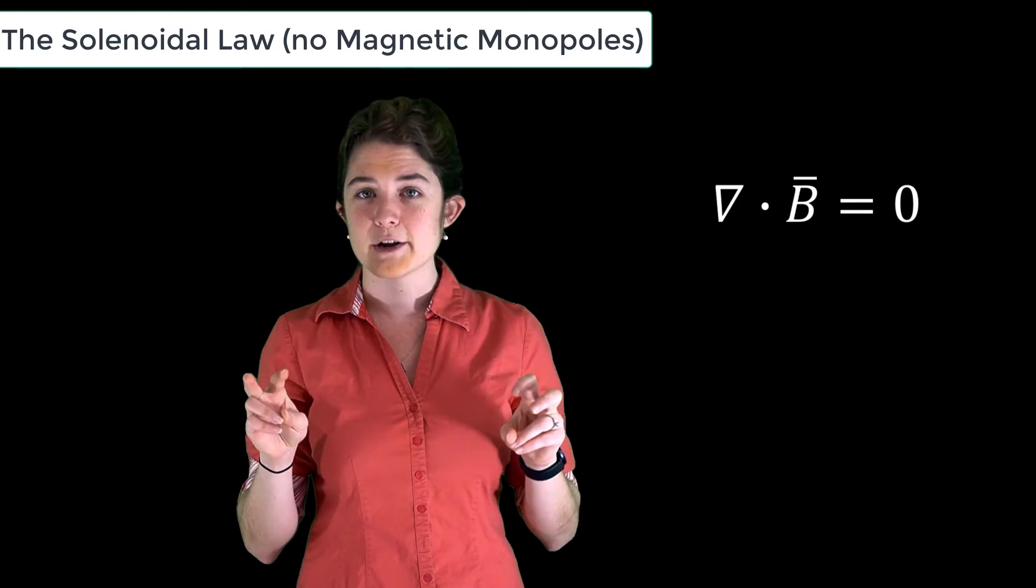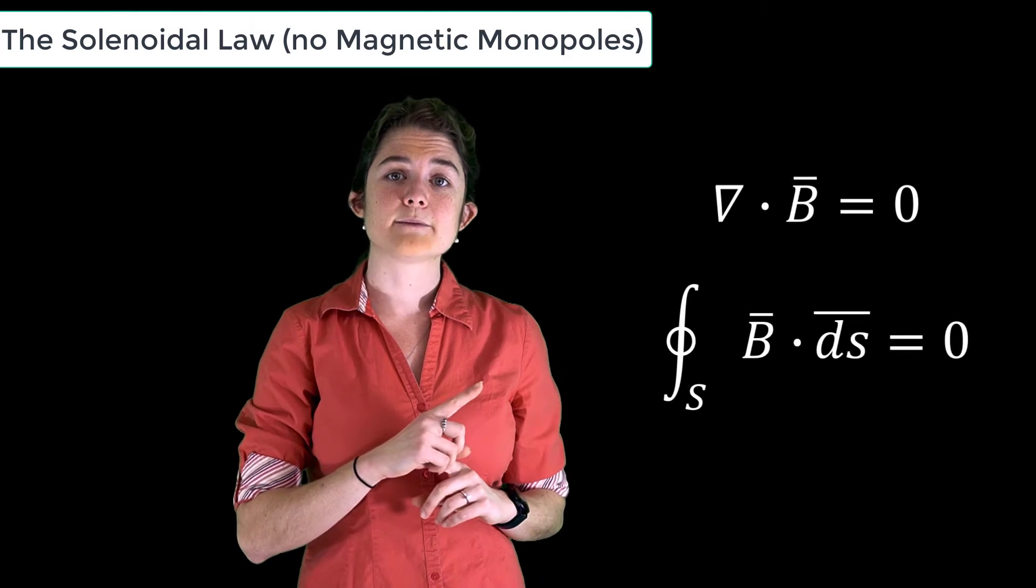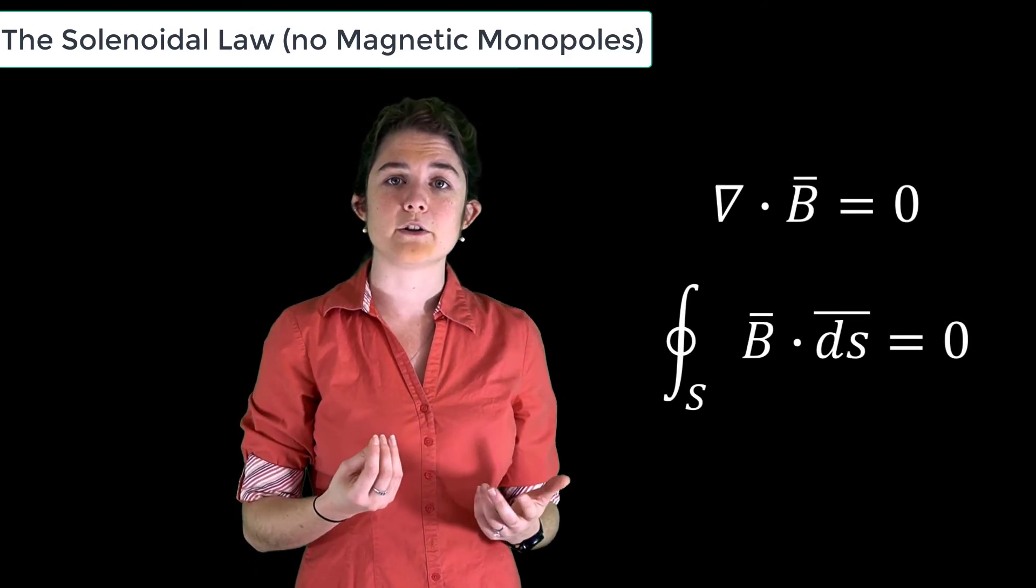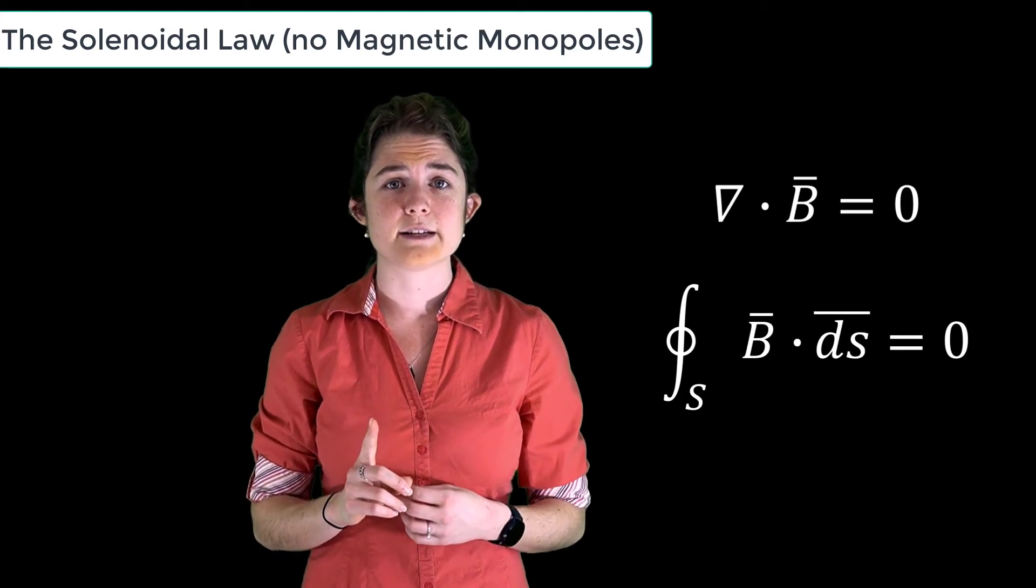Or the no magnetic monopoles law. It can also be considered an integral form like this: the total flux of B into or out of a volume is always zero. It may be helpful to consider this as the magnetic corollary to Gauss's law.